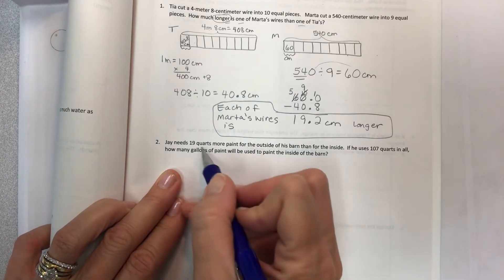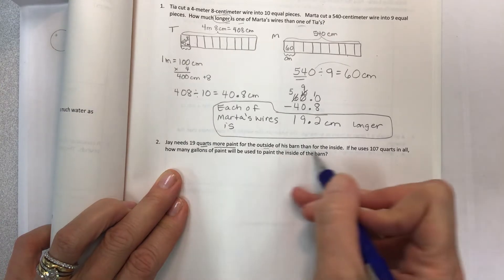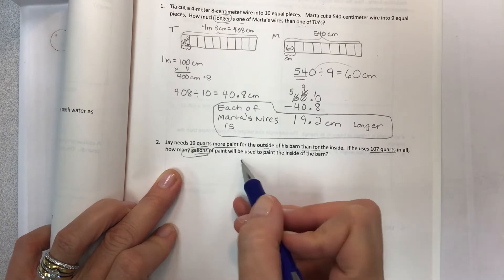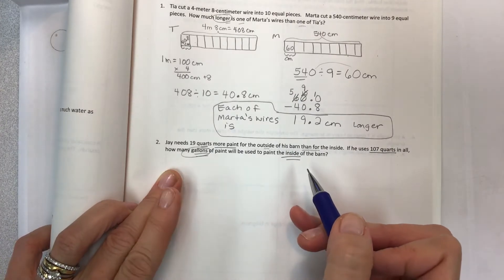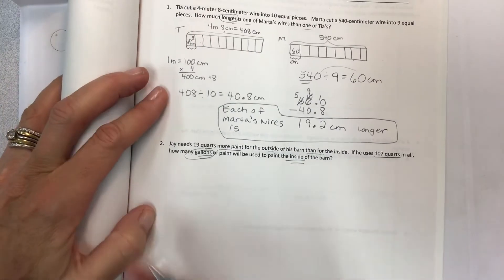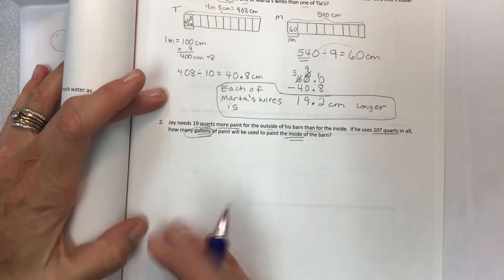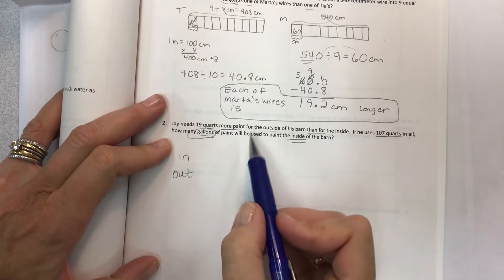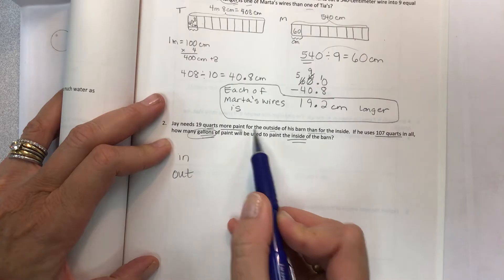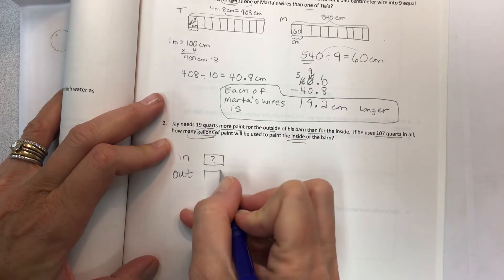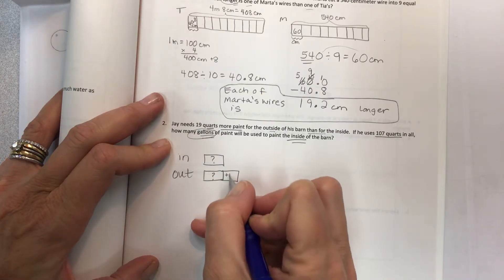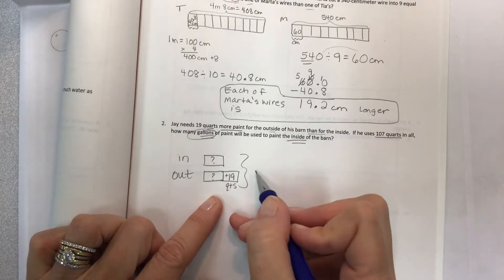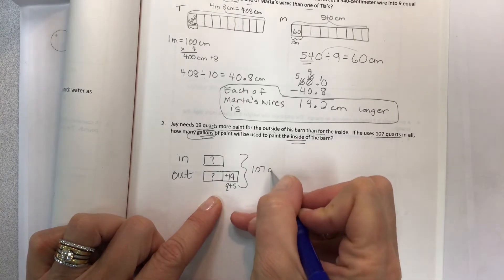Jay needs 19 quarts more paint for the outside of his barn than for the inside. If he uses 107 quarts in all, how many gallons of paint, now they changed the unit, will be used to paint just the inside of the barn. So let's make a tape diagram so we can compare the outside to the inside and look at the total amount of paint we have. We have 19 quarts more for the outside. So I've got mystery amount on the inside and 19 quarts more for the outside than the inside. The total of these two is 107 quarts in all.